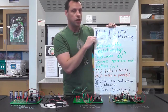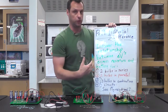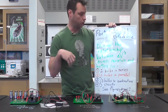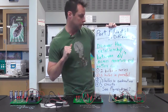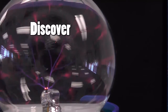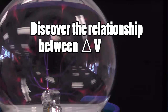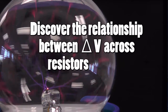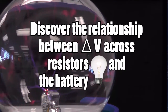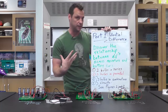In part one, your job is to investigate potential difference, which we also know as a change in voltage, or voltage drops over resistors — in this case over light bulbs. You're going to be discovering the relationship between potential differences across resistors, light bulbs, and the battery for four different circuits that you're going to be designing and setting up.